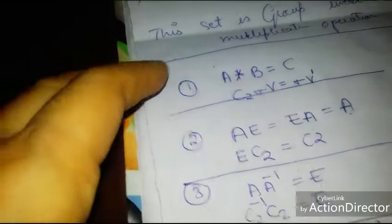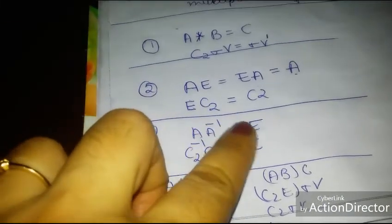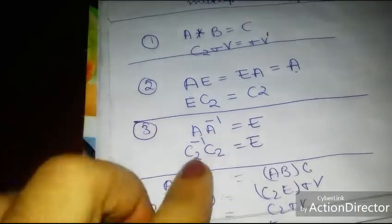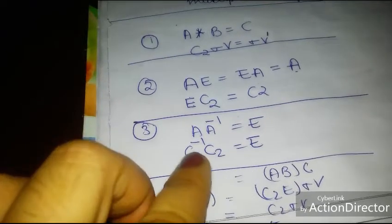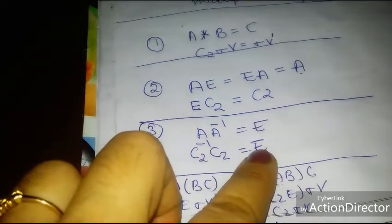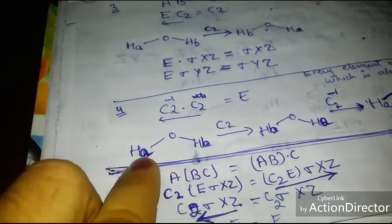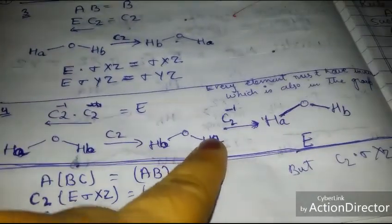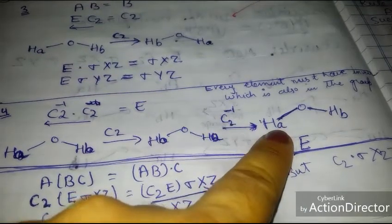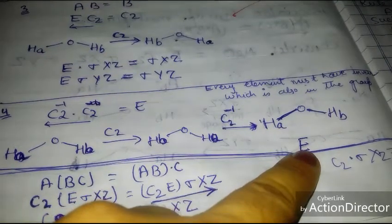The third property is the inverse: A⁻¹ × A = identity. So C2 multiplied by C2⁻¹ gives identity. For water labeled HₐOH_b: applying C2 rotation gives H_bOHₐ, then applying C2 inverse rotates it back — you get the original molecule, which is the identity. This demonstrates the inverse property.